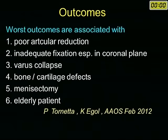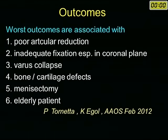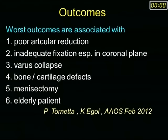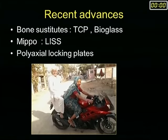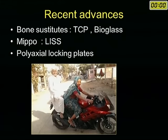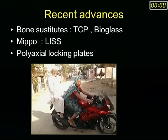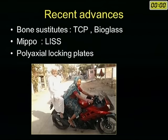Outcomes: the worst outcomes are associated with poor articular reduction, inadequate fixation, varus — the most important factor — and failure to repair the menisci. Recent advances include use of bone substitutes instead of autogenous bone grafts; resorbable tricalcium phosphate is the best, and bioglass has also shown promising results. A LISS technique is being developed for tibial plateau fractures and polyaxial locking plates are already available.